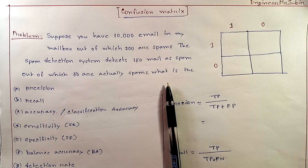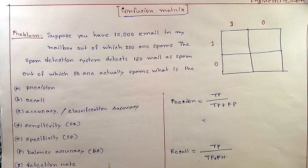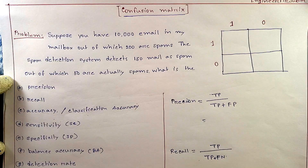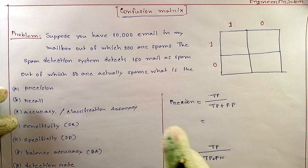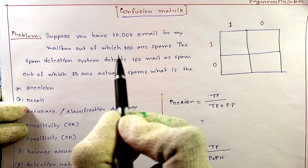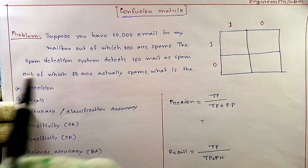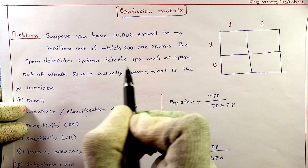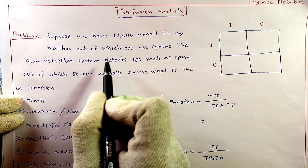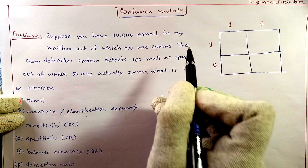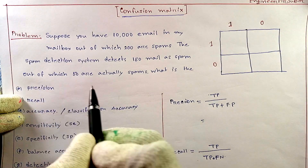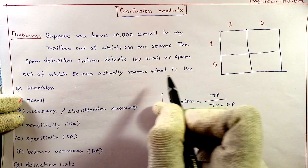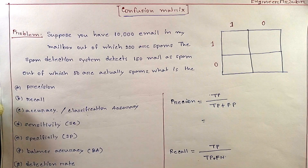From the confusion matrix you can find this type of problem. There will be some values and you have to calculate the precision, recall, accuracy, sensitivity, balanced accuracy, detection rate, and so on. The question is: suppose you have 10,000 emails in your mailbox, out of which 200 are spam. The spam detection system detects 150 as spam, out of which 50 are actually spam. What is the precision, recall, and accuracy?